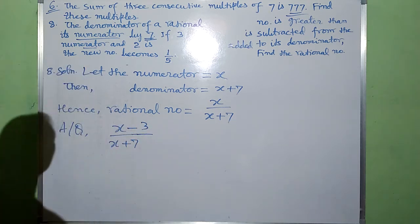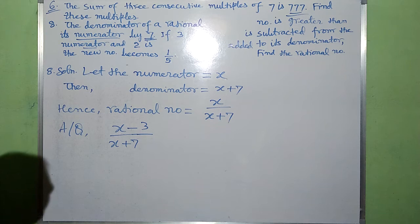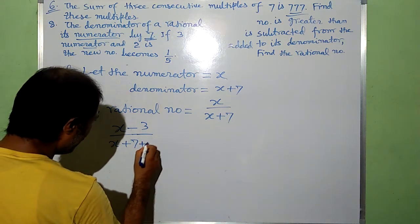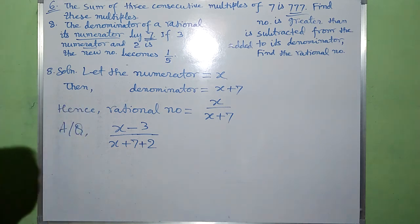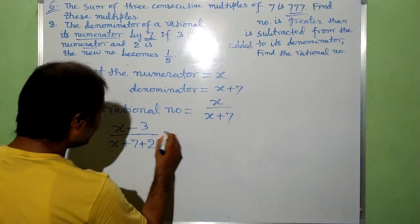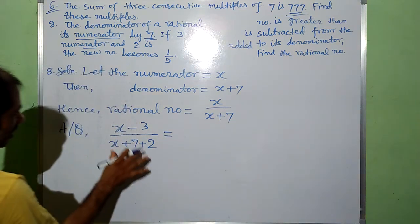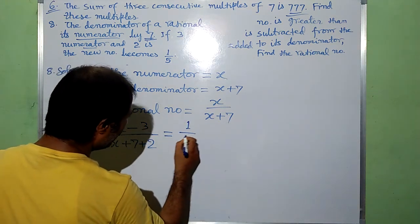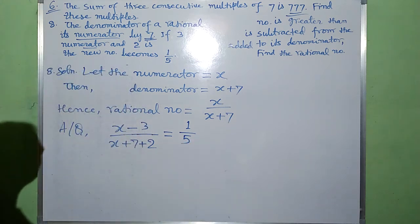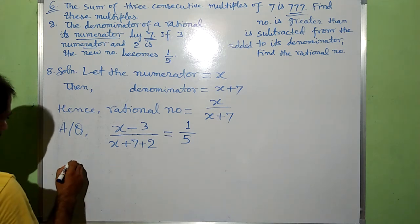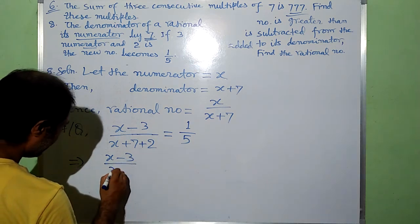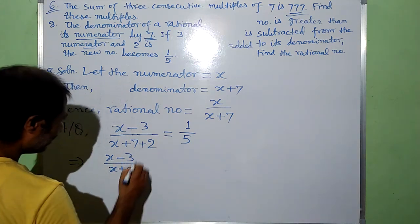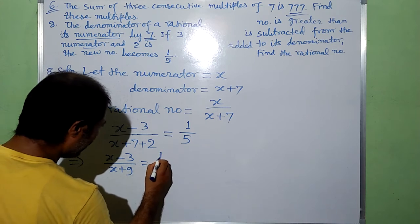And 2 is added to its denominator. The new rational number becomes 1 by 5. We have to find the rational number. Here we have x minus 3 by x plus 9 equals 1 by 5.